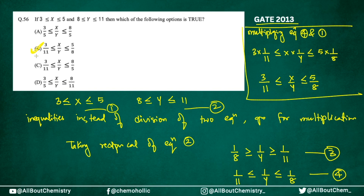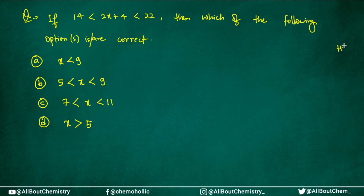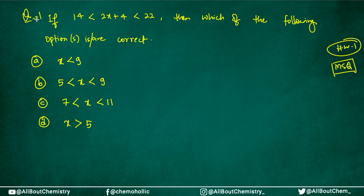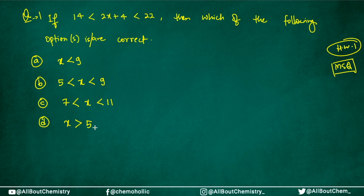Those were two questions from the previous ten years of GATE exams on inequalities. Now here are some homework questions. Homework question 1 is an MSQ type — more than one correct answer is possible. It says: if 14 < 2x + 4 < 22, which of the following options are correct? Options: (A) x < 9, (B) 5 < x < 9, (C) 7 < x < 11, (D) x > 5. Do let me know in the comments what answer you get.